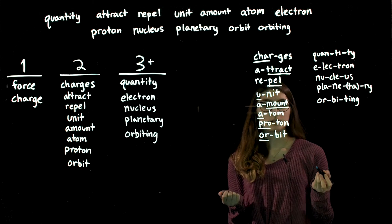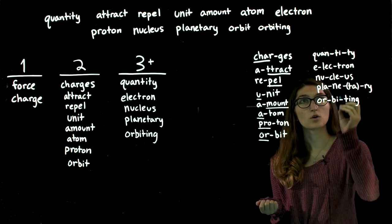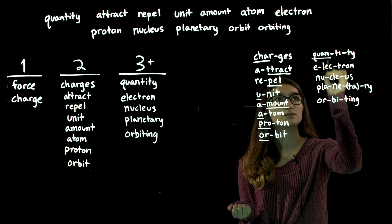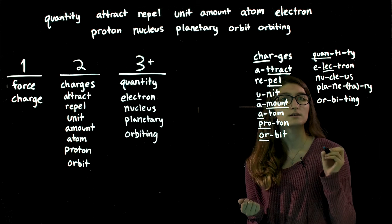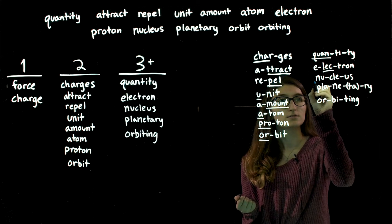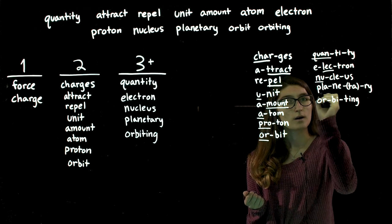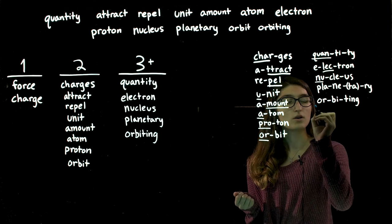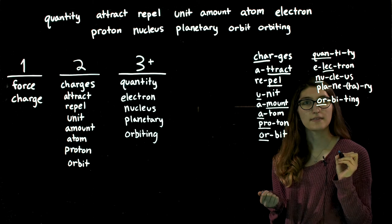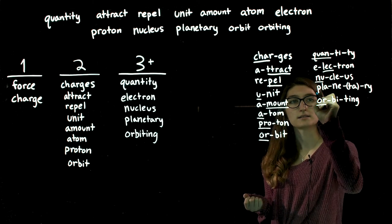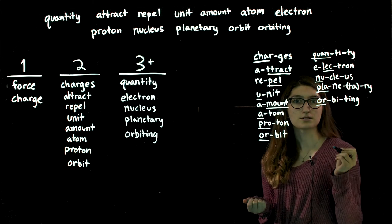And then if we take a look at the three syllables, quantity has the first syllable stressed. Electron has the second syllable stressed. Nucleus, stress is the first syllable. We'll come back to planetary. We have orbiting, which has the first syllable stressed. And then planetary has planetary, the first syllable stressed.